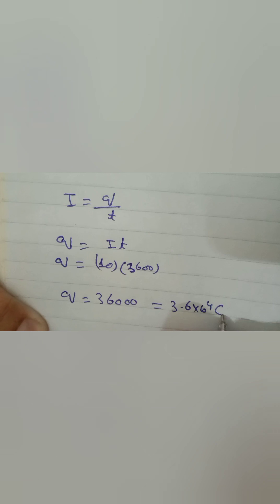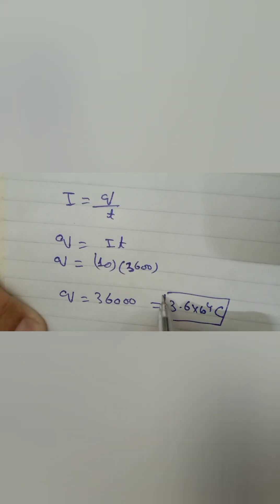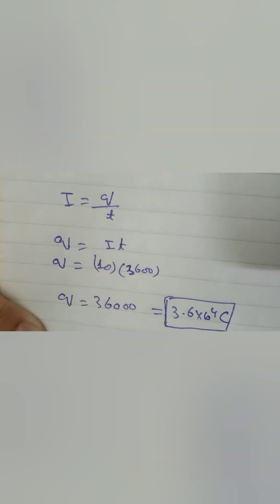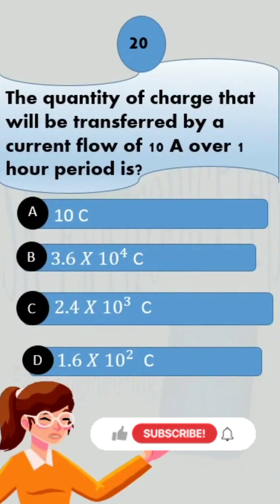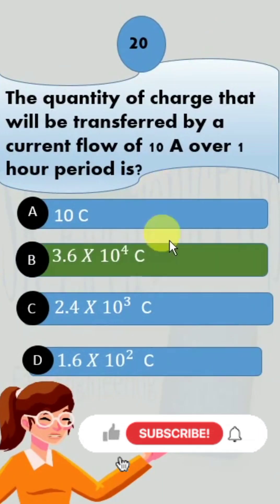Which is the answer. Now look for this in the options. The correct option is option B, 3.6 × 10^4.